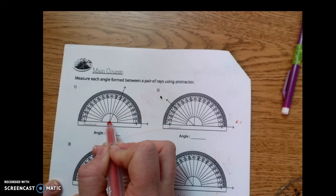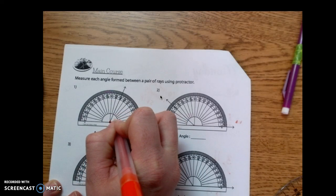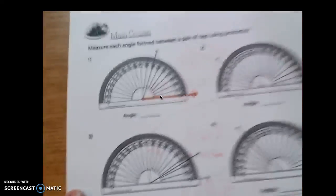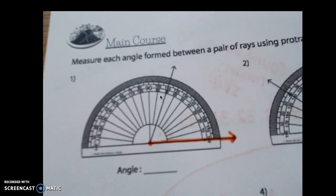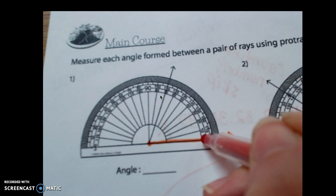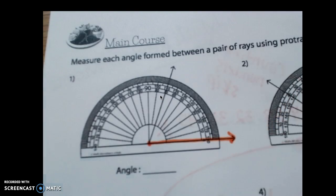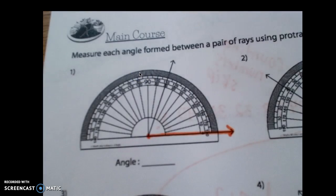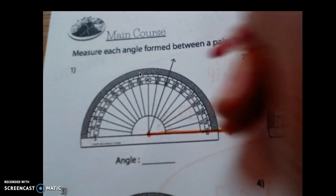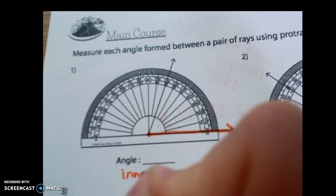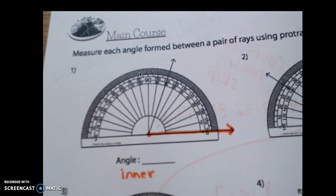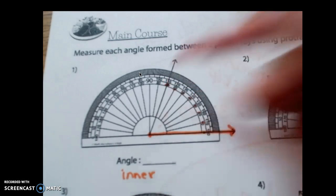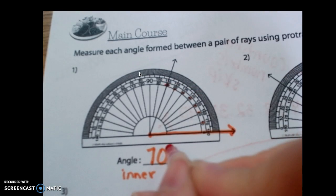But what we're going to do is we're going to look here. We see that the bottom of our angle, this ray right here, is pointing this way. So we're going to look for the zero. I'm going to zoom in here. We're going to look for the zero. So we know that we are using the inner scale. So we are going to be using the inner. So I just want you to write under here, write inner so that you know which one you're using. And then we're going to count up 10, 20, 30, 40, 50, 60, 70. So this angle is 70 degrees.